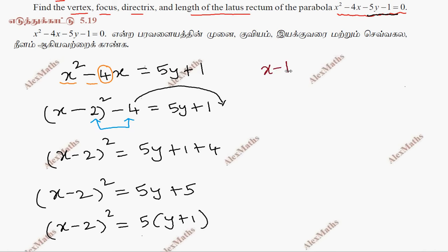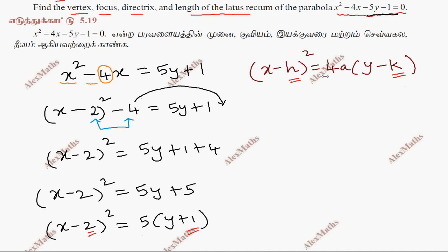This matches the general formula: x minus h whole square equals 4a into y minus k. Comparing, h equals 2, k equals minus 1, and 4a equals 5.